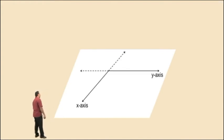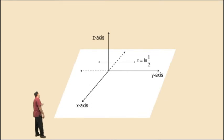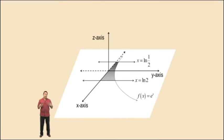First, let's bring in a Cartesian coordinate system. In this problem, we are dealing with an area that is enclosed by the line x equals natural log of 1 half, x equals natural log of 2, f of x equals e to the x, and the x-axis. Each individual piece of our manifold has a volume that can be found by summing up semi-circular cross sections perpendicular to the x-axis whose radii is equal to f of x.